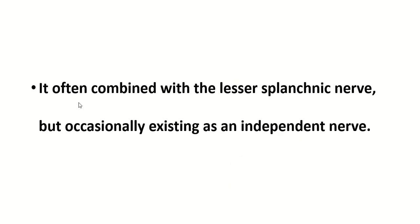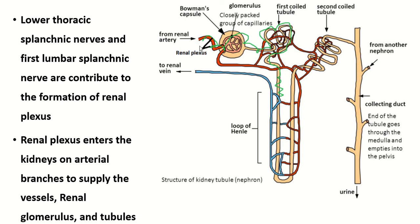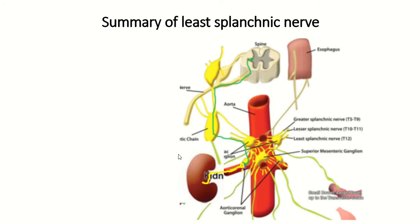The least splanchnic nerve often combines with the lesser splanchnic nerve, but occasionally exists as an independent nerve. Regarding its distribution: the renal plexus is distributed along the blood vessels of the kidney, and also around the glomerulus and the tubules.